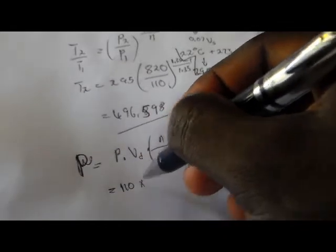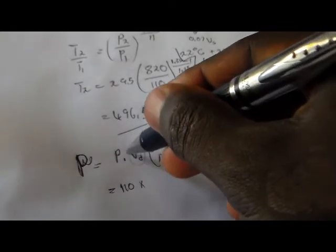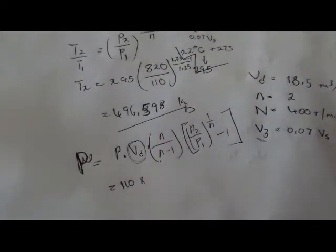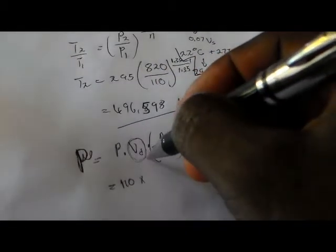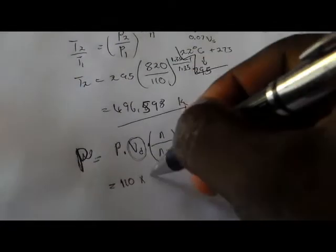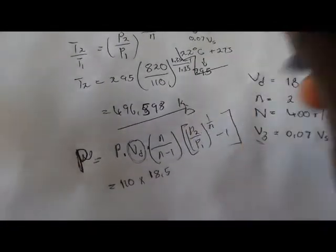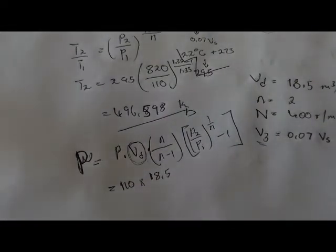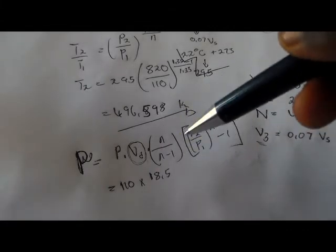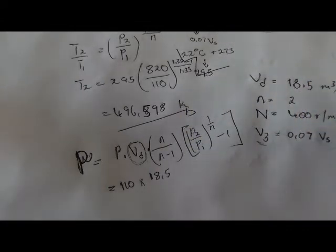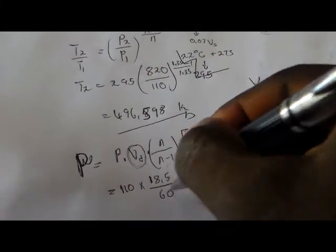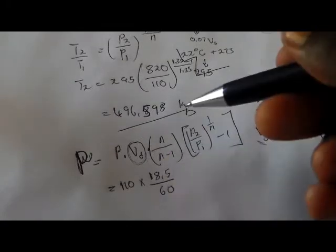Pressure one is 110, multiplied by — here we're going to use the volume delivered, not the swept volume, not the effective volume, but the volume delivered, which is 18.5. They said the volume delivered is 18.5 cubic meters per minute. But we want it in seconds, that's why we divide by 60 to convert from minutes to seconds.